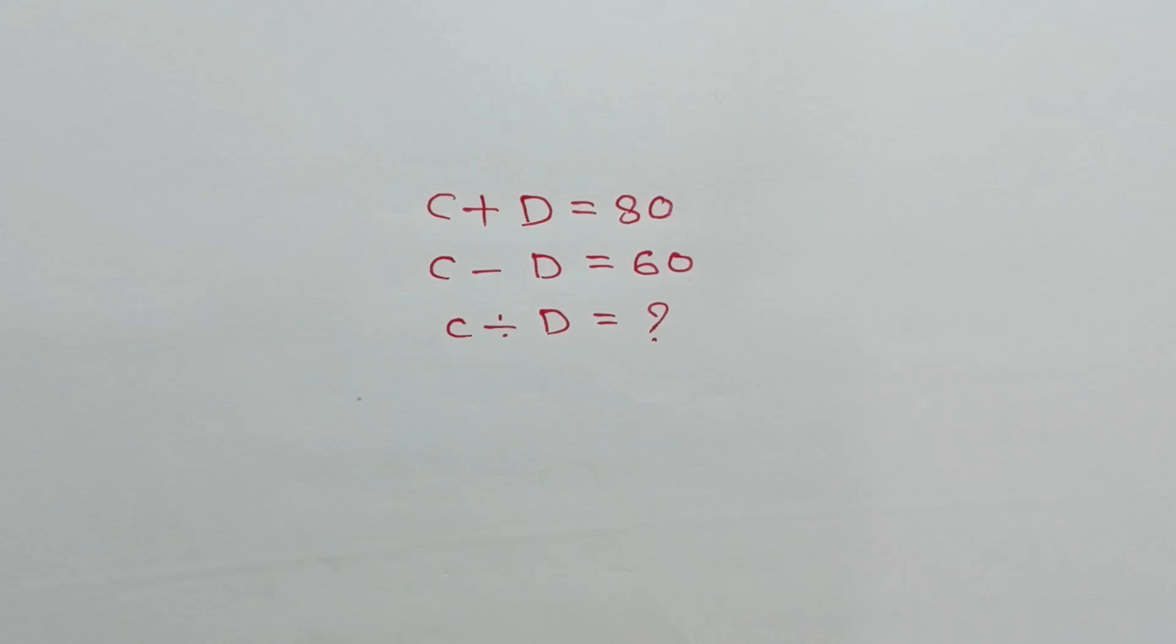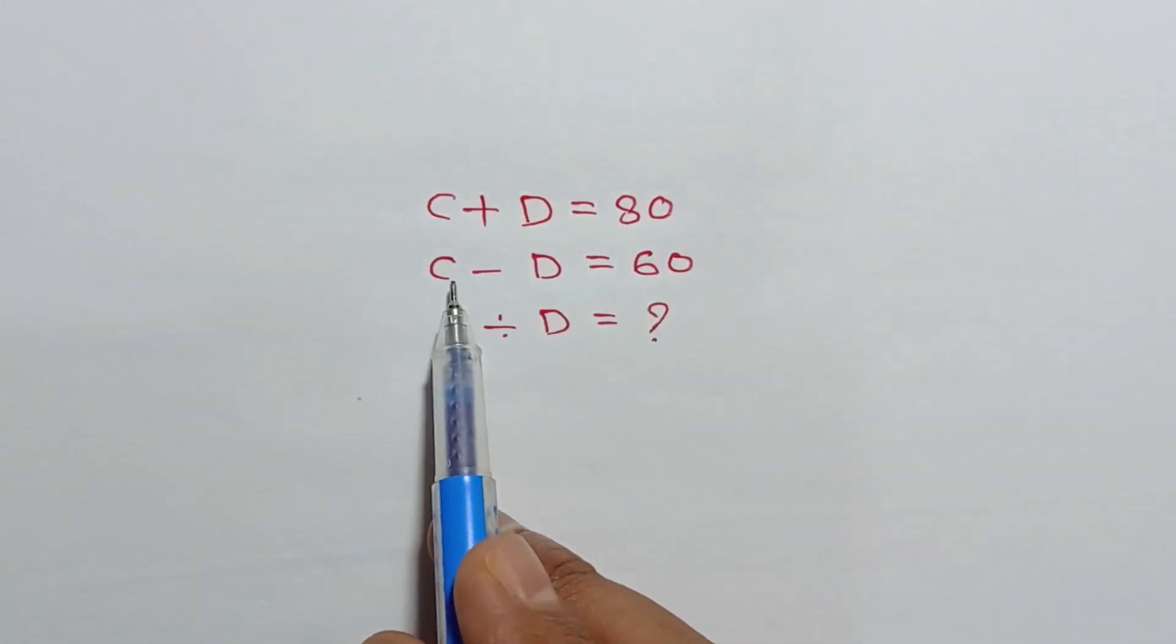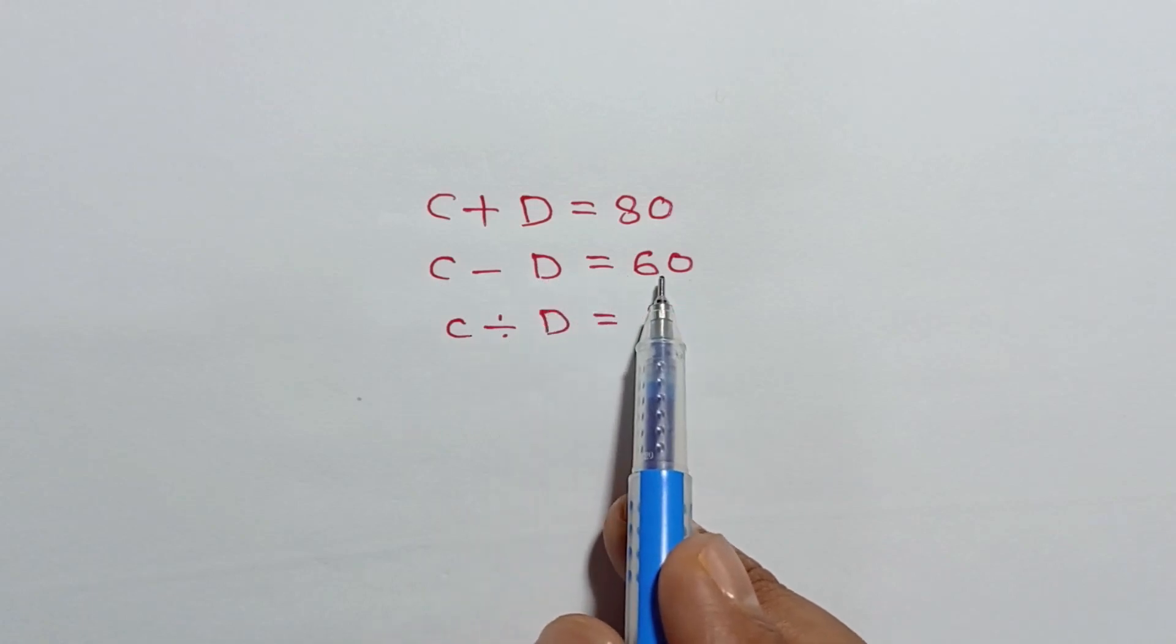Hi everyone, in this video I am going to show how to find the value of C divided by D, where C plus D is equal to 80 and C minus D is equal to 60.